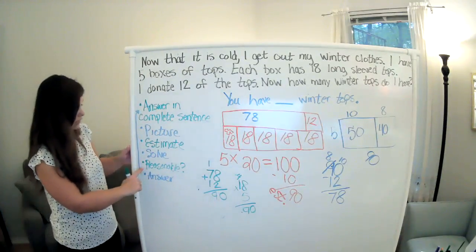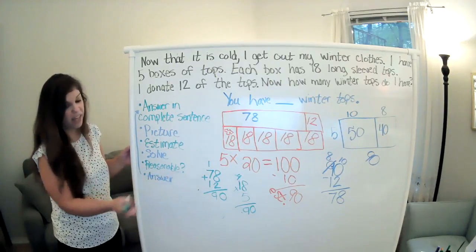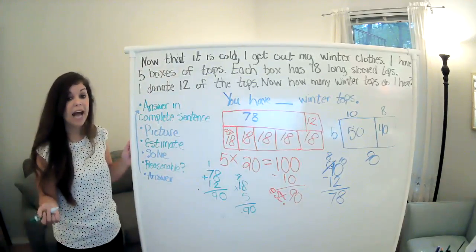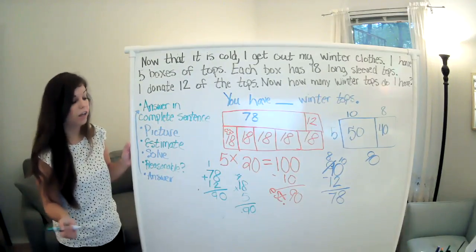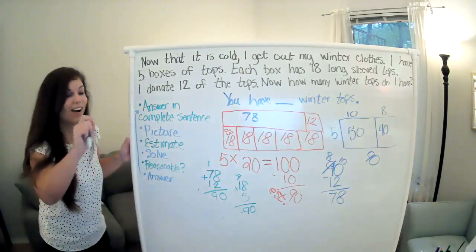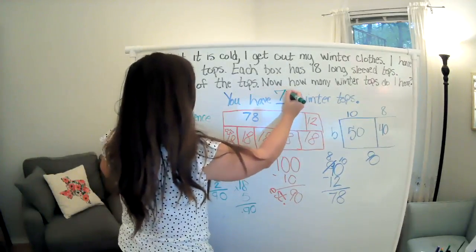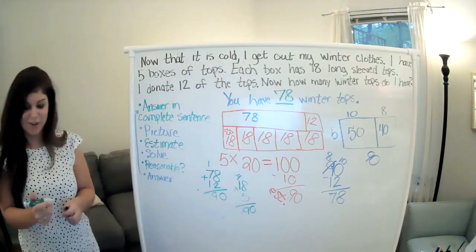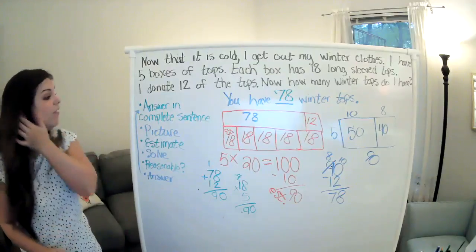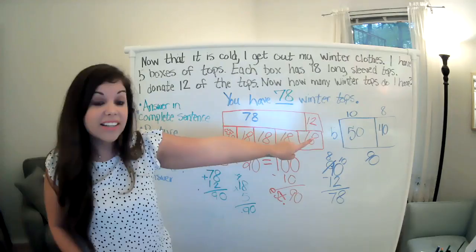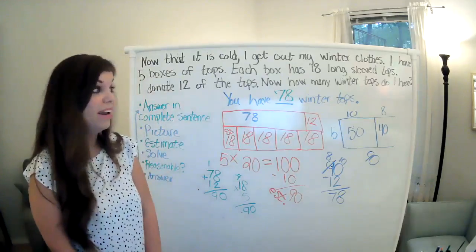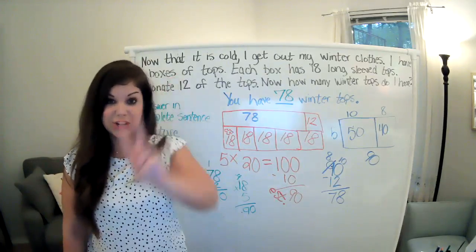So the very last step after I decided it's reasonable, and 78 and 90 are pretty close. And I'm not surprised, because I knew that my answer was probably going to be smaller, because I had to round up. So the last step is the answer. So now is when I can put 78 in my answer spot. So this was a two-step problem, because I had to figure out how many tops I had all together, and then I had to figure out how much I had left after I donated. So now it is your turn to practice your two-step problem.